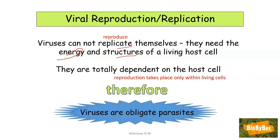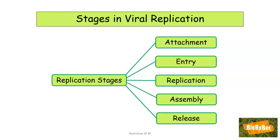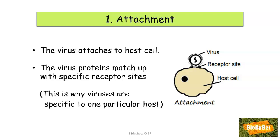This is an extremely important point, and it's a favourite in exams: why are viruses obligate parasites? They're obligate parasites because they are totally dependent on a host cell, and reproduction can only take place within living cells. There are a number of steps involved in viral replication: one — attachment, two — entry, three — replication, four — assembly, and five — release.